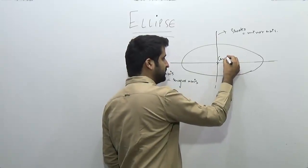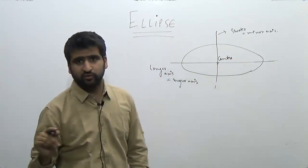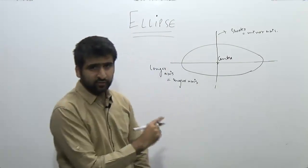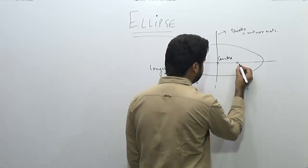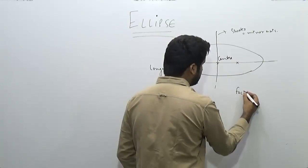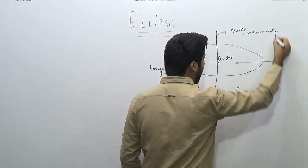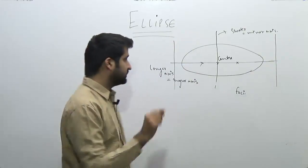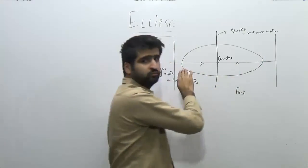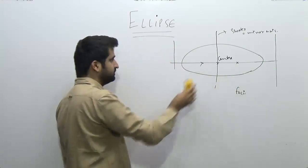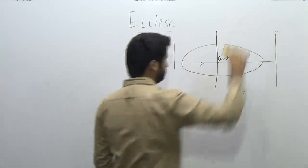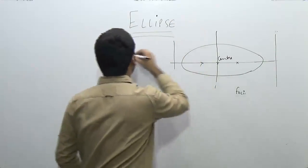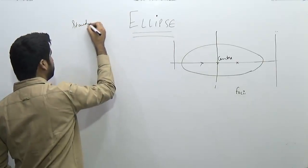As we discussed in the case of a parabola, a parabola has one focus and one directrix. In the case of an ellipse, there are two foci — the plural of focus is foci — and two directrices. So an ellipse has two foci and two directrices. Here are the two foci and the center.